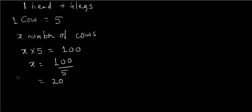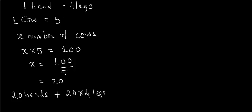Let's verify: 20 cows have 20 heads and 20 × 4 = 80 legs. Total = 20 + 80 = 100. The answer is confirmed correct.